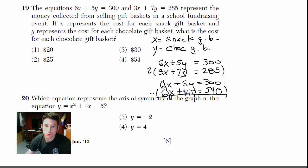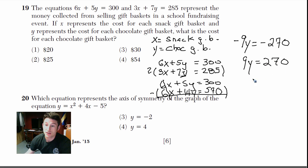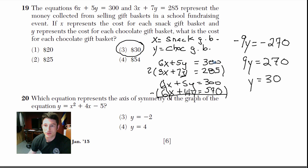300 minus 570 equals negative 270. So we have negative 9y equals negative 270. Both sides are negative, so we divide: 9y equals 270, and y equals 30. Since y represents the chocolate gift basket, each chocolate gift basket costs $30.